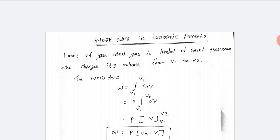Since pressure is constant, it is taken outside of the integration. The equation becomes: Work done is equal to P into the integral from V1 to V2 of dV.